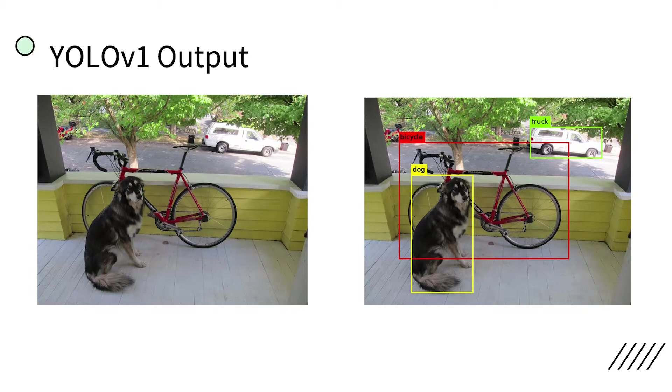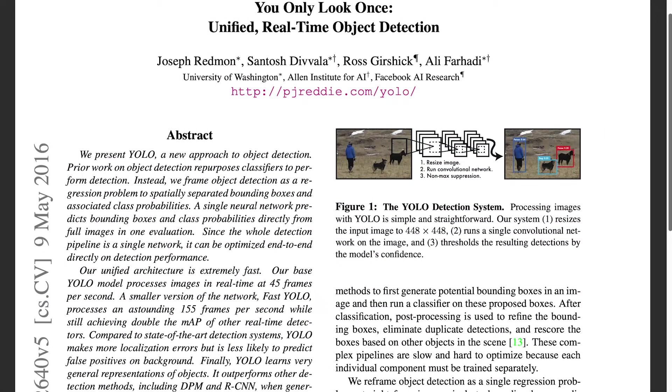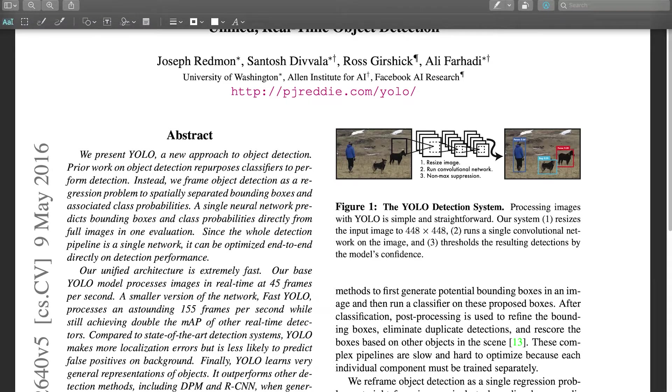So the first thing I'm going to do is make sure I have a proper understanding of the paper abstract. We present YOLO, a new approach to object detection. Prior work on object detection repurposes classifiers to perform detection. Alright, I don't quite understand what a classifier is, so I'm going to go ahead and highlight that in red.